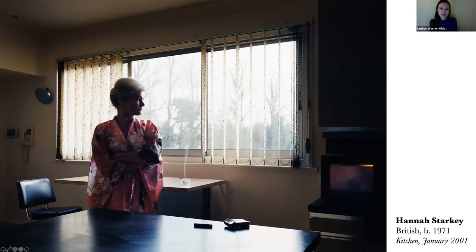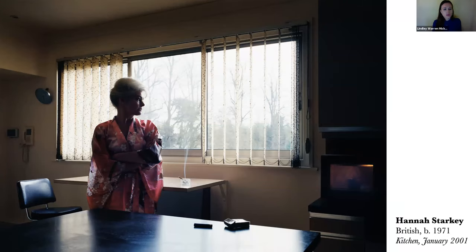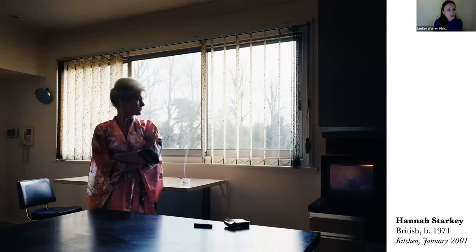We jump to 2001 with Hannah Starkey. Looking at Starkey in this sequence goes back to Cameron and Stieglitz in thinking about painting — in Starkey's case she's really inspired by the painter Edward Hopper. In her work she's thinking about the female perspective and how females are represented in photo history and art history. We often see women in mundane settings — a kitchen, a cafeteria or diner — and images are often untitled or titled simply like 'Kitchen,' so she's not giving us the subject's name, allowing the image to carry its own life.